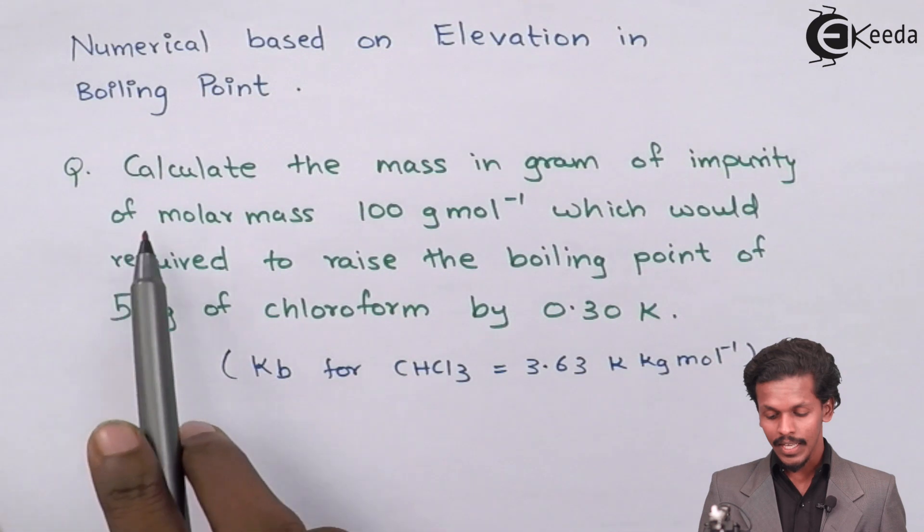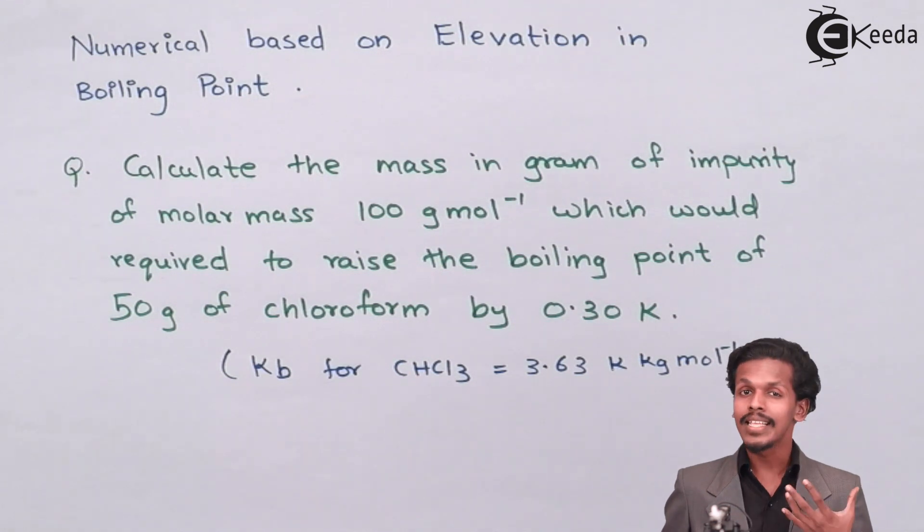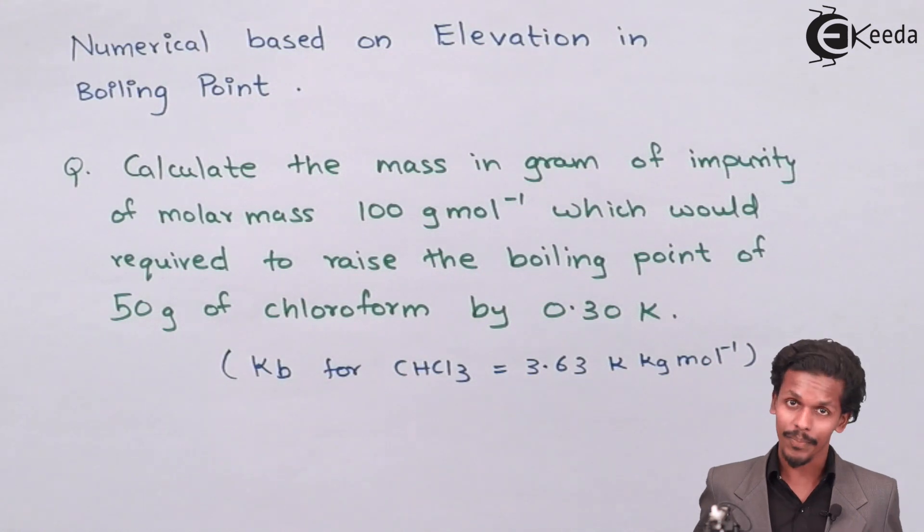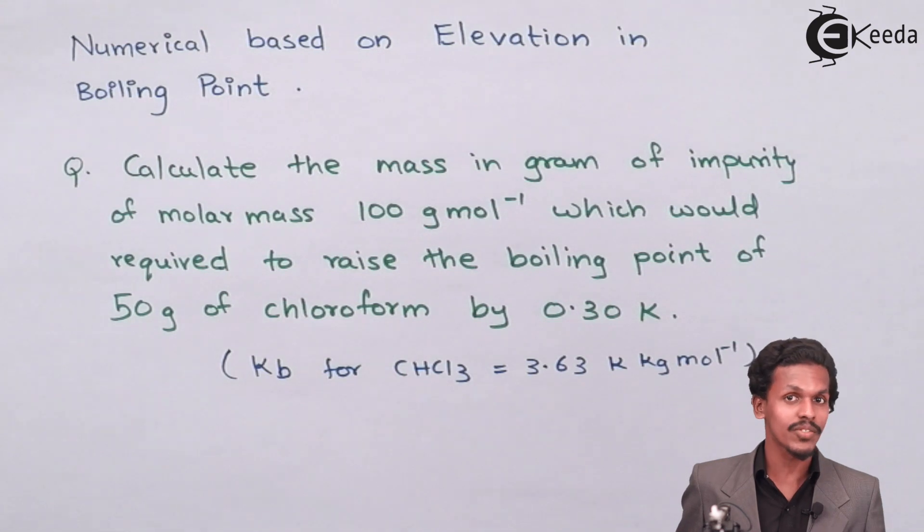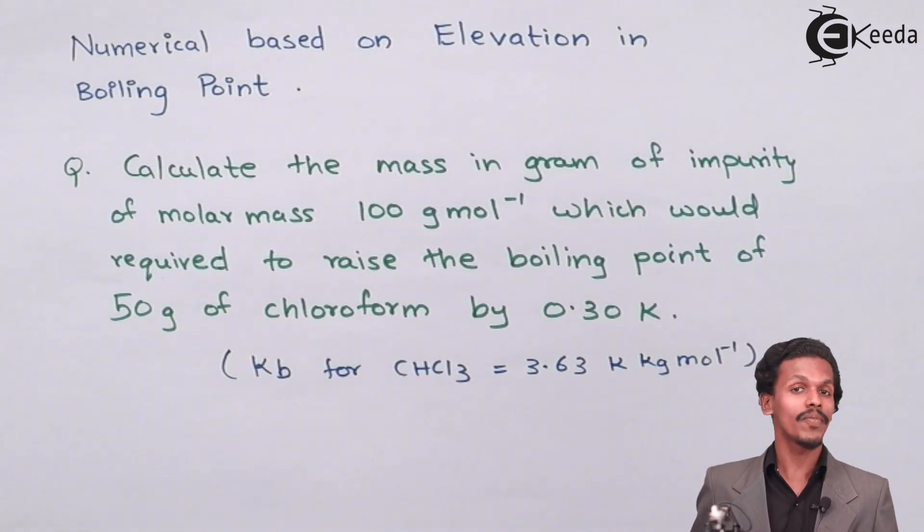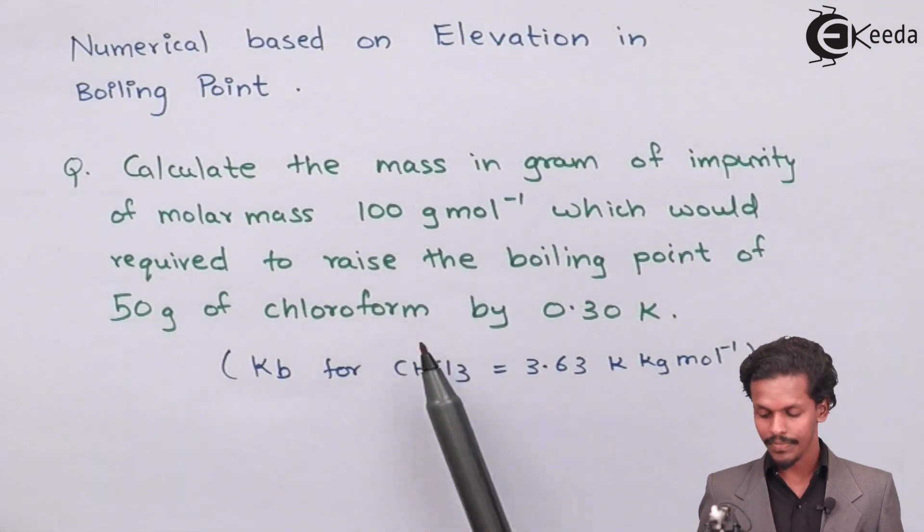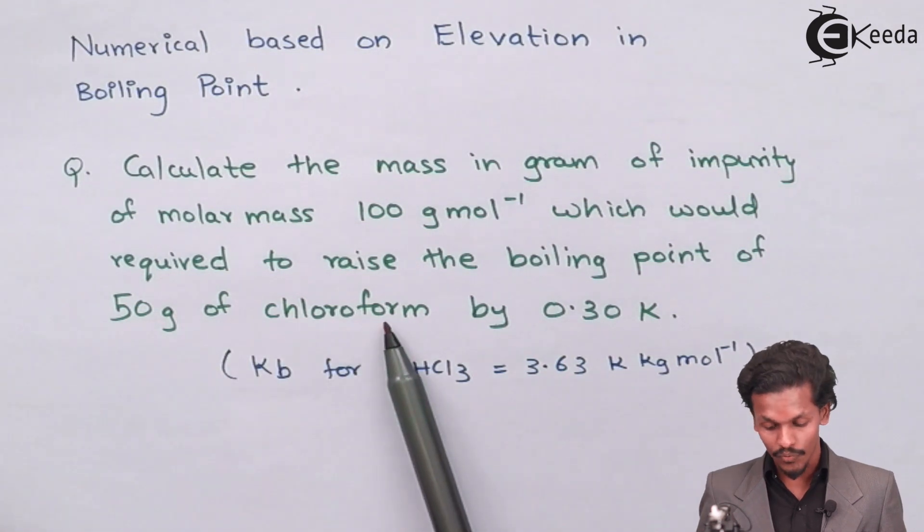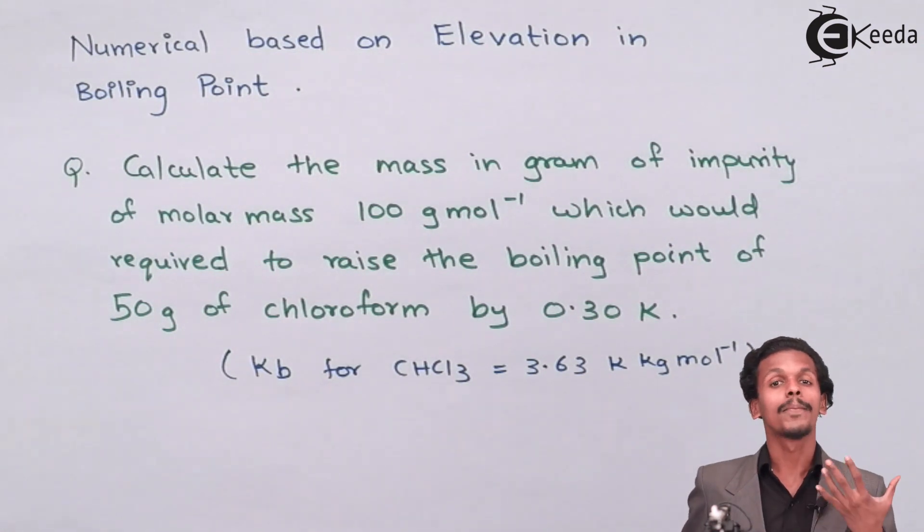The question is: we have to calculate the mass in grams of impurity. In this case the impurity is the solute because a solvent is always pure. So basically we have to find out the mass of solute which has a molar mass of 100 g/mol, which would be required to raise the boiling point of 50 g of chloroform. In this case, 50 g of chloroform is the pure solvent.